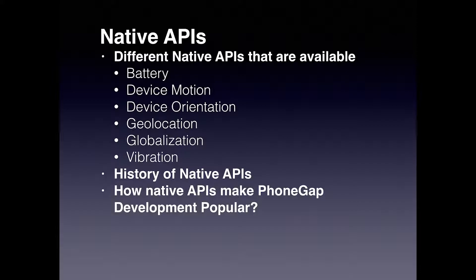There are different native APIs like battery status, device motion, device orientation, geolocation, globalization, vibration, and many many more.